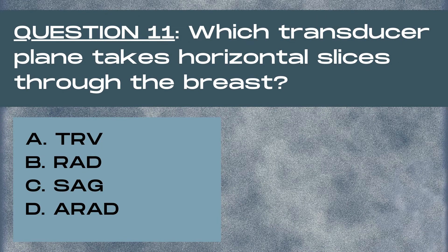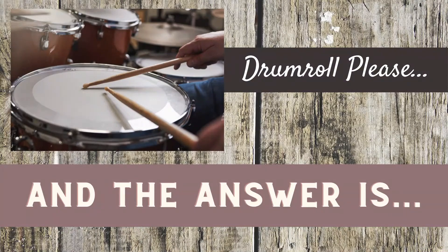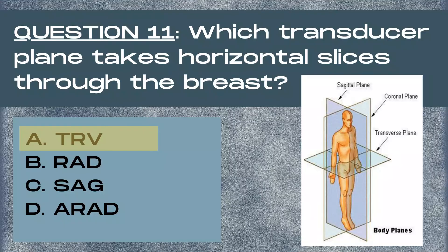Question 11. Which transducer plane takes horizontal slices through the breast? A transverse, B radial, C sagittal, or D anti-radial? The answer is A, transverse. The transverse plane I like to think of as horizon or horizontal — the horizon is flat, side to side — and this is our horizontal, flat, side-to-side plane in the body.